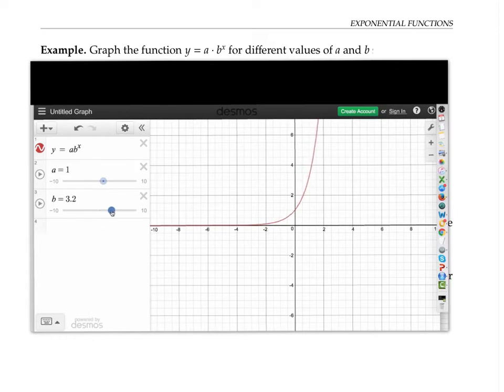If I put b back down close to one, my graph becomes more flat. At exactly one, my graph is just a constant.